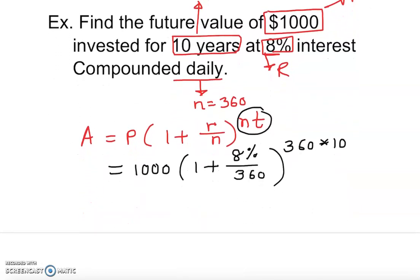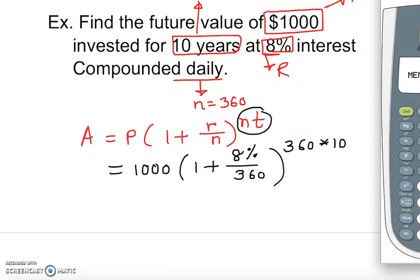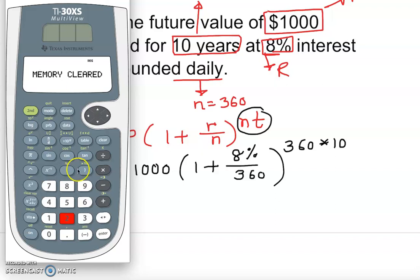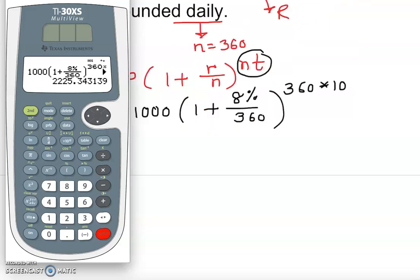We want to make sure we use a handy calculator, which is going to be very helpful in this case. So I'll type 1000 open parenthesis one plus, then 8 second gives you that percentage, then 360 on the right side, close parenthesis, exponent, and 360 times 10. Enter. Clearly you see the answer is there waiting for you.